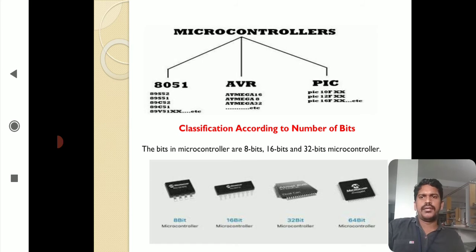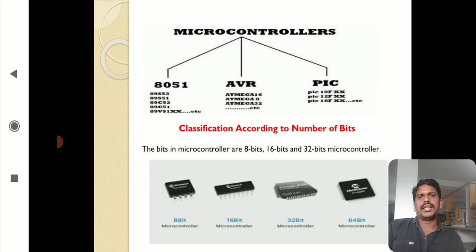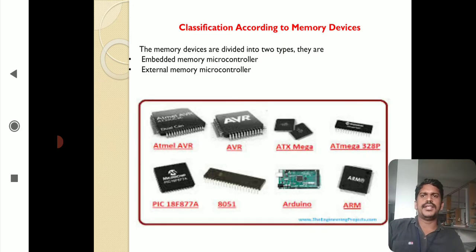You can observe the integrated ICs shown below. The classifications are 8-bit microcontroller, 16-bit, 32-bit, and 64-bit, all available in the market. These are the classifications of microcontrollers according to the processing number of bits.